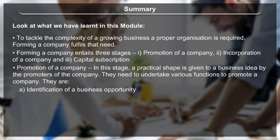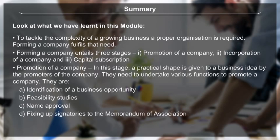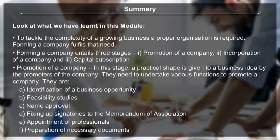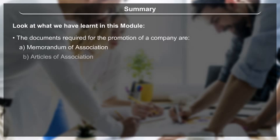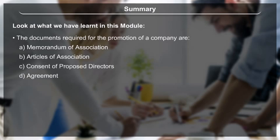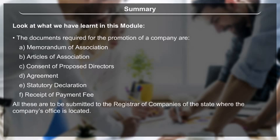The promoter's functions are: A) identification of a business opportunity, B) feasibility studies, C) name approval, D) fixing up signatories to the Memorandum of Association, E) appointment of professionals, and F) preparation of necessary documents. The documents required for the promotion of a company are: Memorandum of Association, Articles of Association, consent of proposed directors, agreement, statutory declaration, and receipt of payment fee. All these are to be submitted to the Registrar of Companies of the state where the company's office is located.